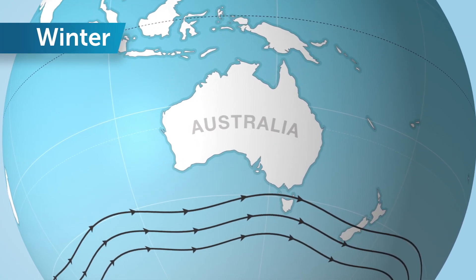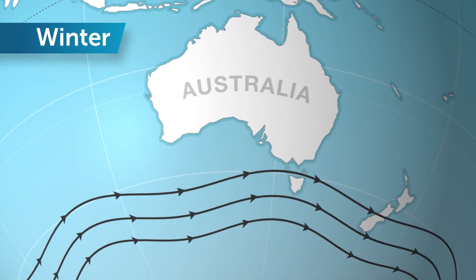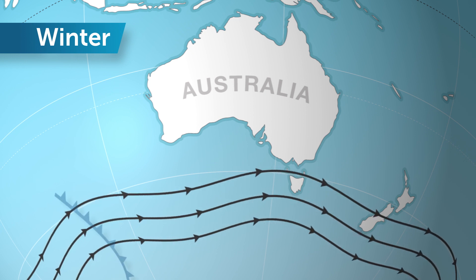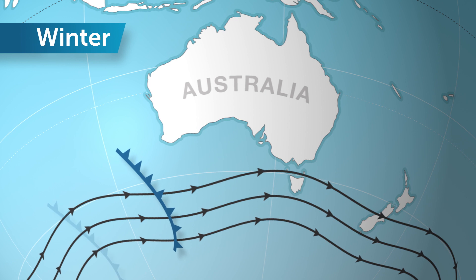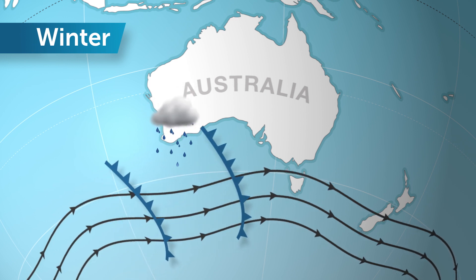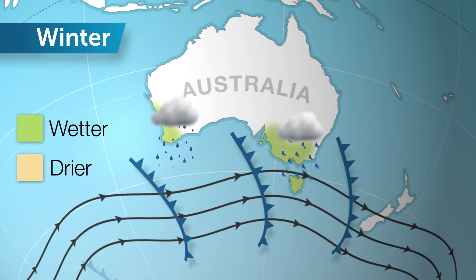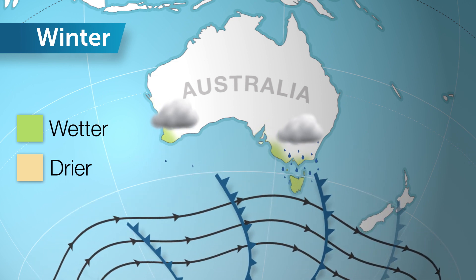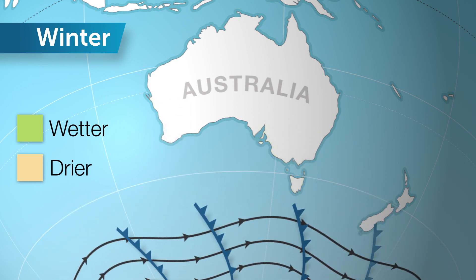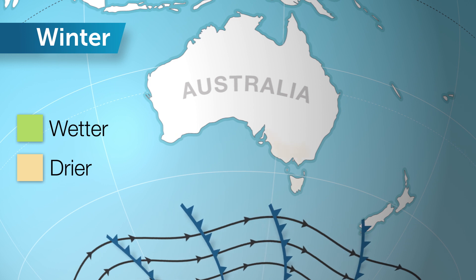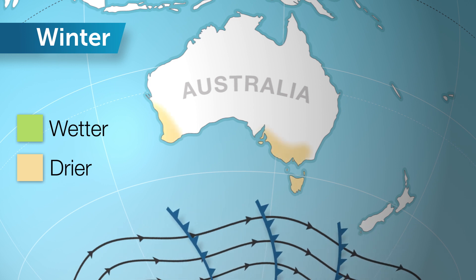SAM's influence on Australian weather patterns varies during the year. Winter is the time that has the greatest impact across southern Australia. Typically during winter, the top of this belt of westerly winds is located over southern Australia. This means cold fronts are drawn up from the south and can cross the Australian coast bringing normal winter rains. But if these winds shift towards Antarctica, the rain-bearing systems also head south, meaning fewer fronts and drier conditions for southern Australia.